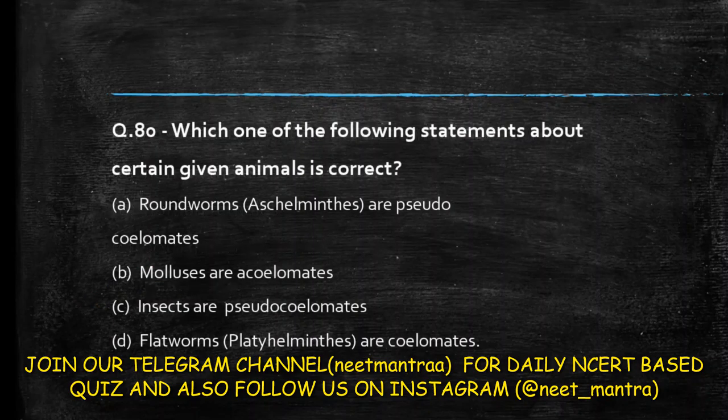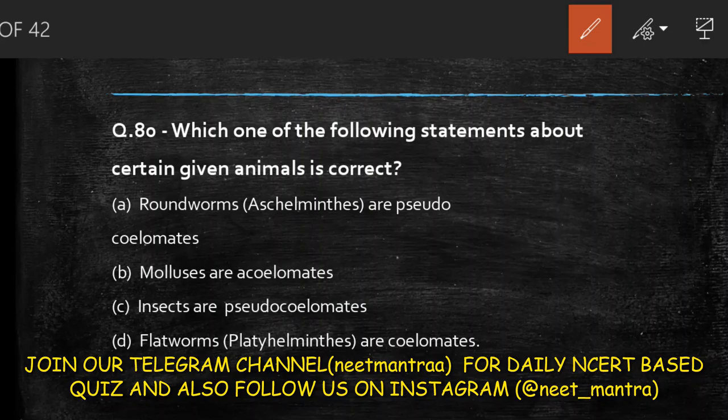Next question: which one of the following statements about certain given animals is correct? Three statements are wrong, one is correct. Roundworms or Aeschelminthes are pseudocoelomates — this appears to be the correct statement. Mollusca are acoelomates — incorrect. Insects are pseudocoelomates — incorrect. Platyhelminthes are coelomates — incorrect. So the answer is that roundworms are pseudocoelomates.